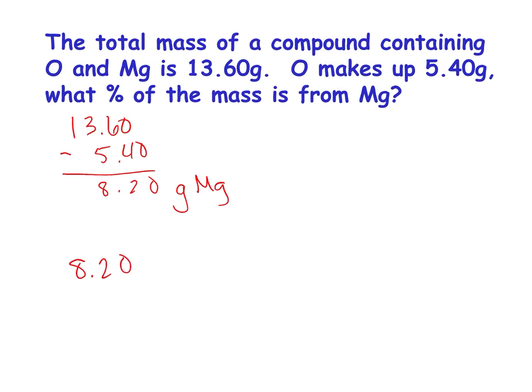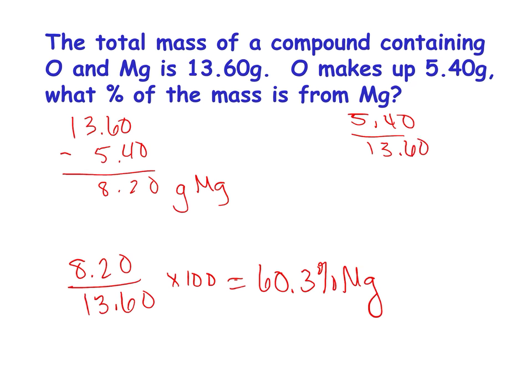And I could do part over whole times 100. So 8.20. Hold on a second. Divided by 13.60 times 100 is 60.3% magnesium. You could do that. Or what you could do is you could say oxygen is 5.40 out of the 13.60 times 100. So 5.4 divided by 13.60 times 100 gives me 39.7%. And then you could do 100 minus 39.7.